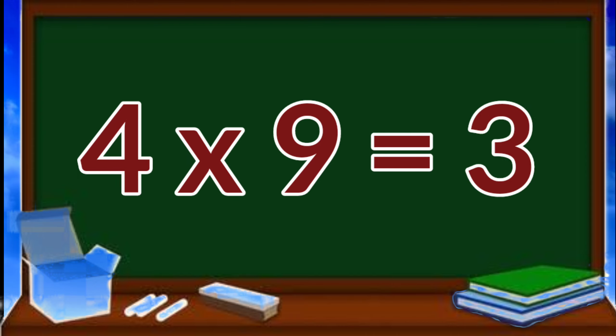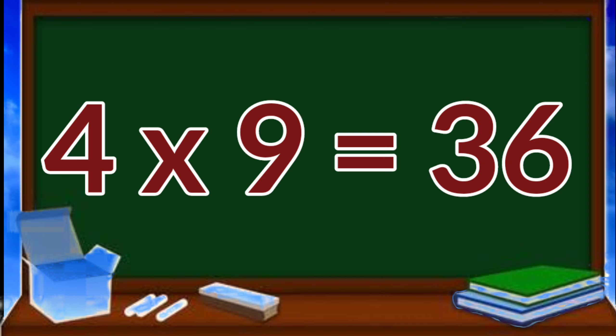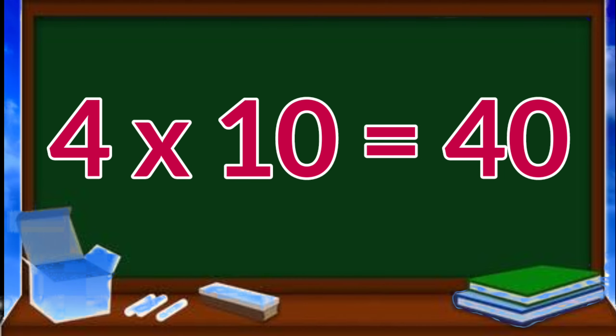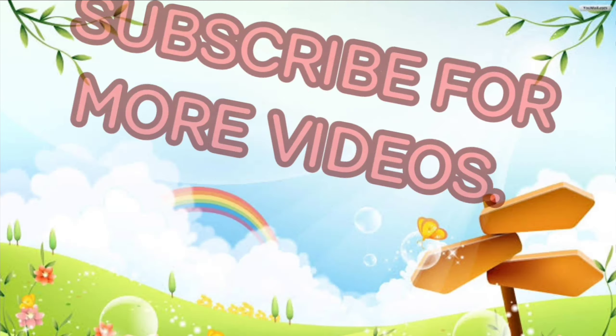Four nines are thirty-six. Four tens are forty.